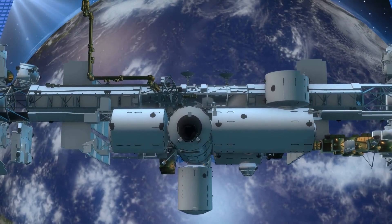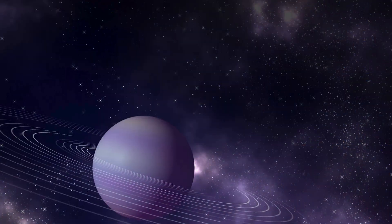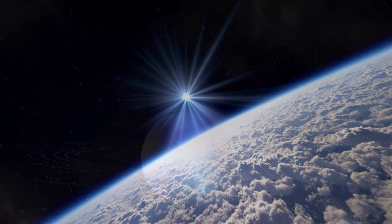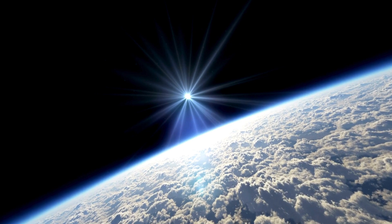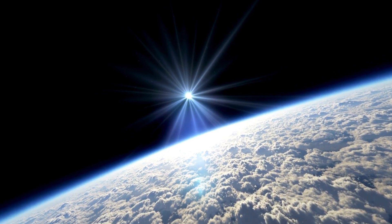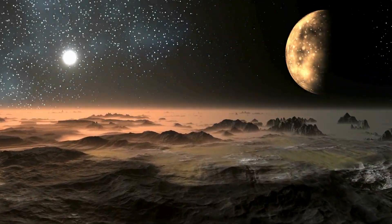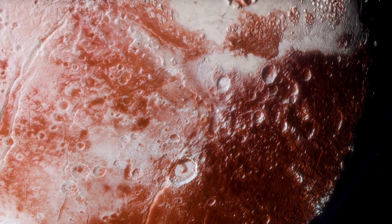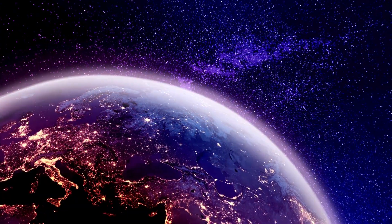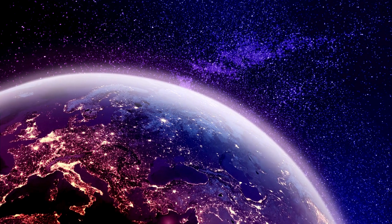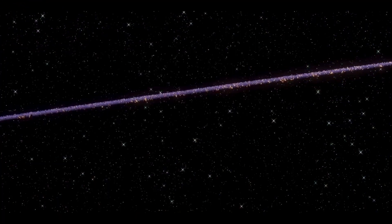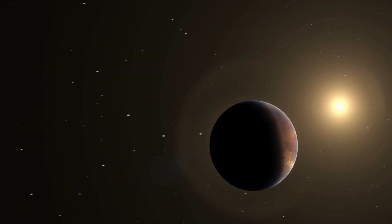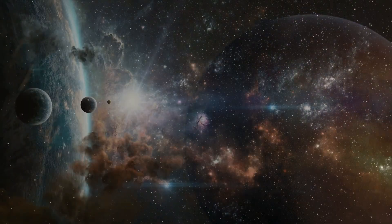But beneath its icy facade lies a world teeming with questions. Recent images from the James Webb Space Telescope reveal glowing patterns that defy explanation. Could these strange signals hint at something extraordinary hidden beneath the surface? Triton's surface isn't just visually striking, it's a clue to its dynamic nature. Despite its frozen exterior, scientists believe that Neptune's immense gravity keeps Triton geologically active. This process, known as tidal heating, could sustain a subsurface ocean under miles of ice, an environment that might just support life.